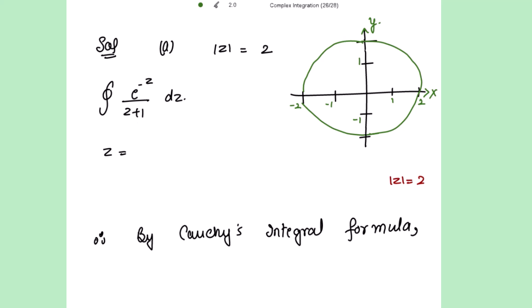The denominator is given to us as z plus 1. We just have to put this denominator equal to 0. So when we put this denominator equal to 0, we get z to be equal to negative 1.